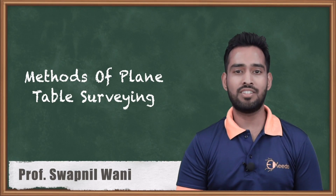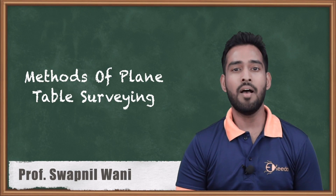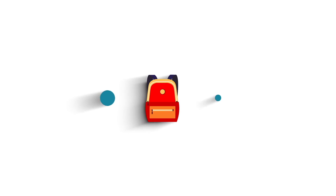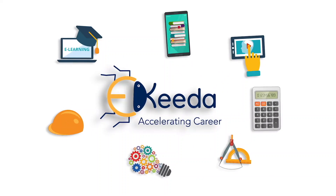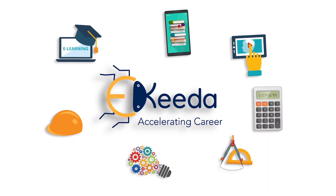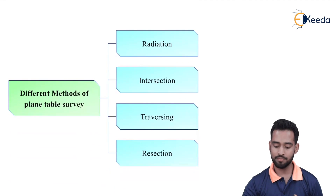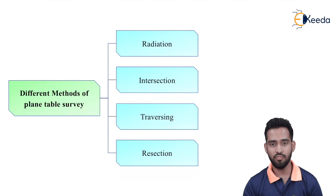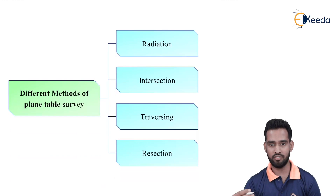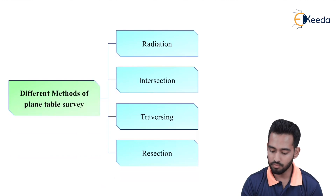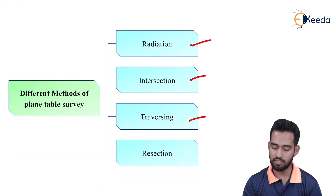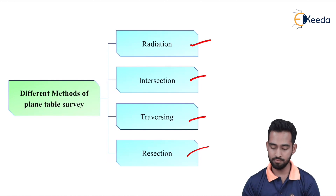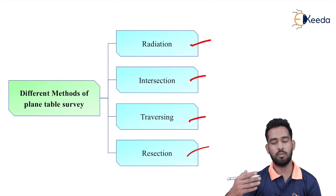Hello friends, today's topic of discussion is various methods of plane table surveying. We will see what are the different methods of plane table surveying. In general, there are 4 methods of plane table surveying, and every method is suitable for a different kind of work. The 4 methods are Radiation, Intersection, Traversing, and Resection. We will see each method one by one.